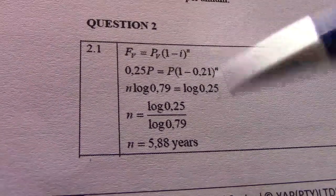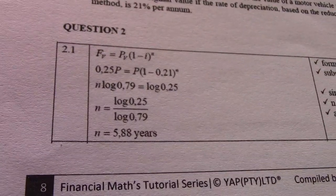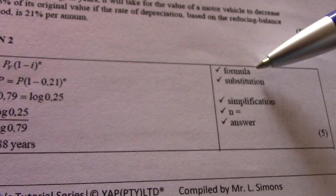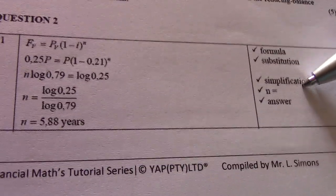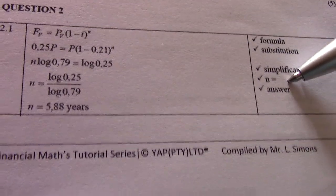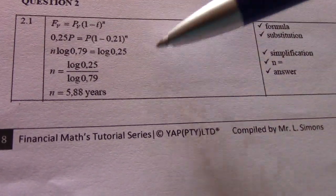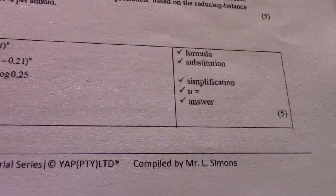If you want to, I have done the calculator work in a previous example. So 1 mark for formula, 1 for substitution, 1 for simplifying, 1 for n equal to the logs and 1 for the answer. So that is 5 marks.